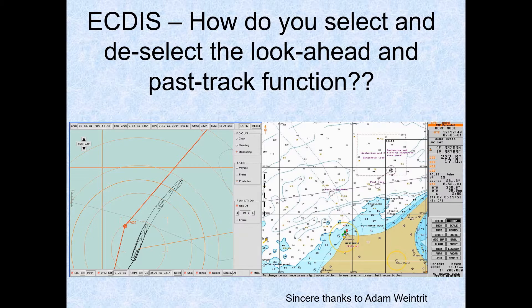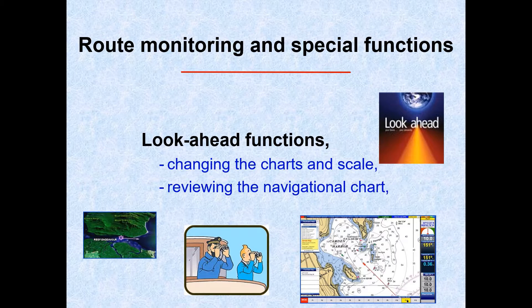For those who don't know what the ECDIS look ahead feature is: the look ahead function is used to change the chart scale, review the navigational chart, and review the navigational situation ahead and around the ship. For route monitoring, the selected route and own ship's position should appear whenever the display covers that area. It should be possible to display a sea area that does not have the ship on the display — for example, for look ahead route planning. While route monitoring, it should be possible to return to the route monitoring display covering own ship's position immediately by a single operator action.